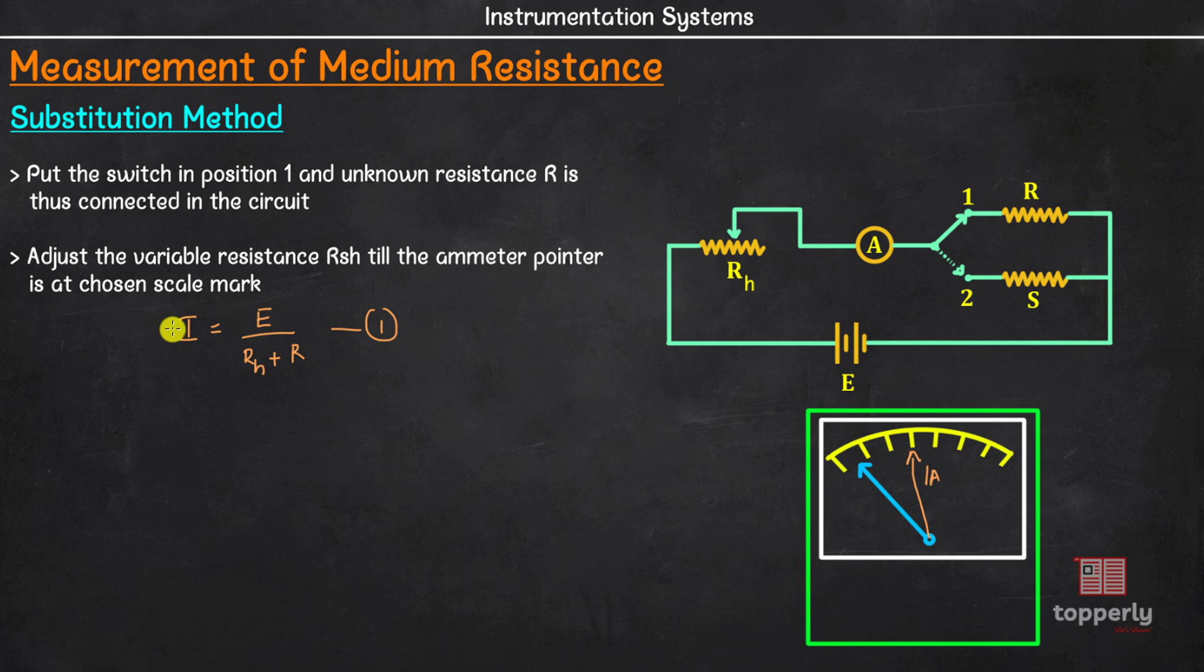Once we have set the current in such a way that the ammeter points to a chosen scale mark, we can move to the third step. In the third step, we will change the switch from position 1 to position 2 putting the standard variable resistance S in the circuit. An important thing to note is that, here we are keeping the variable resistance RH intact. So as the switch is changed to position 2, the current in the circuit varies. As a result, the ammeter might now point to some other position. This brings us to the final step in the procedure.